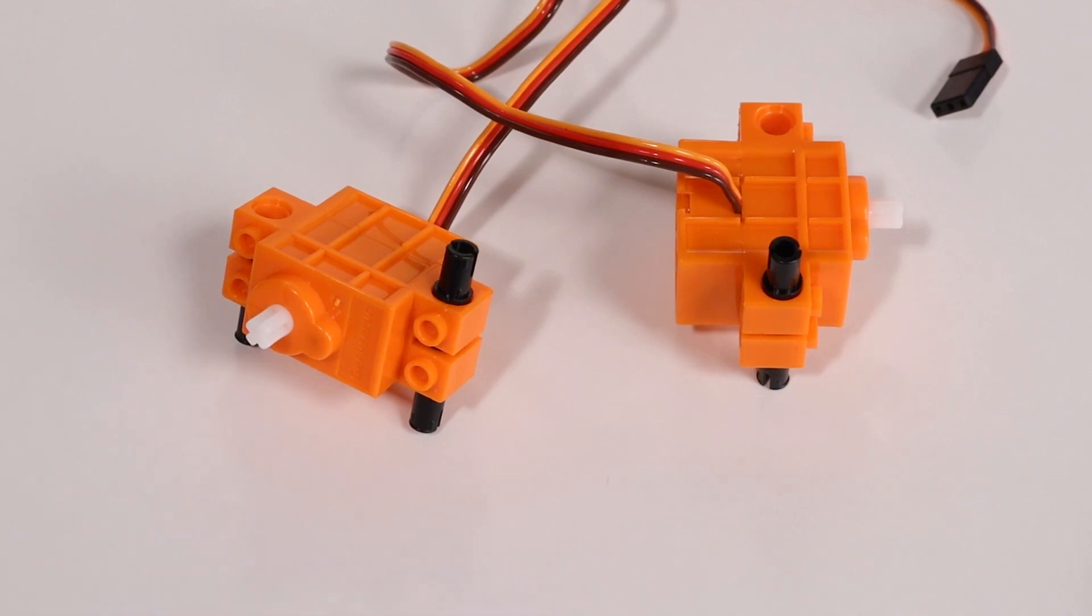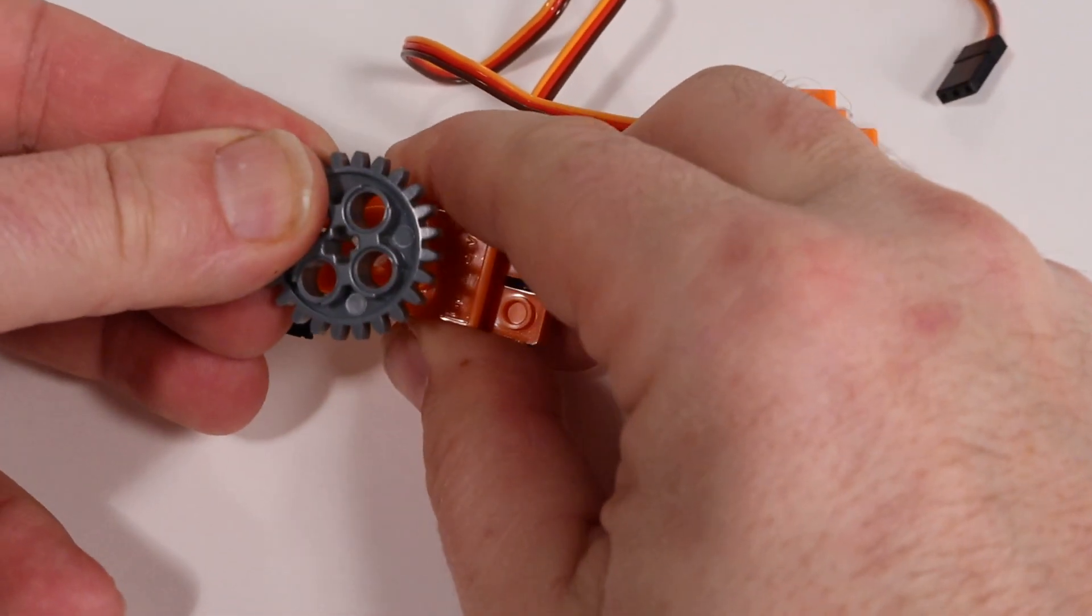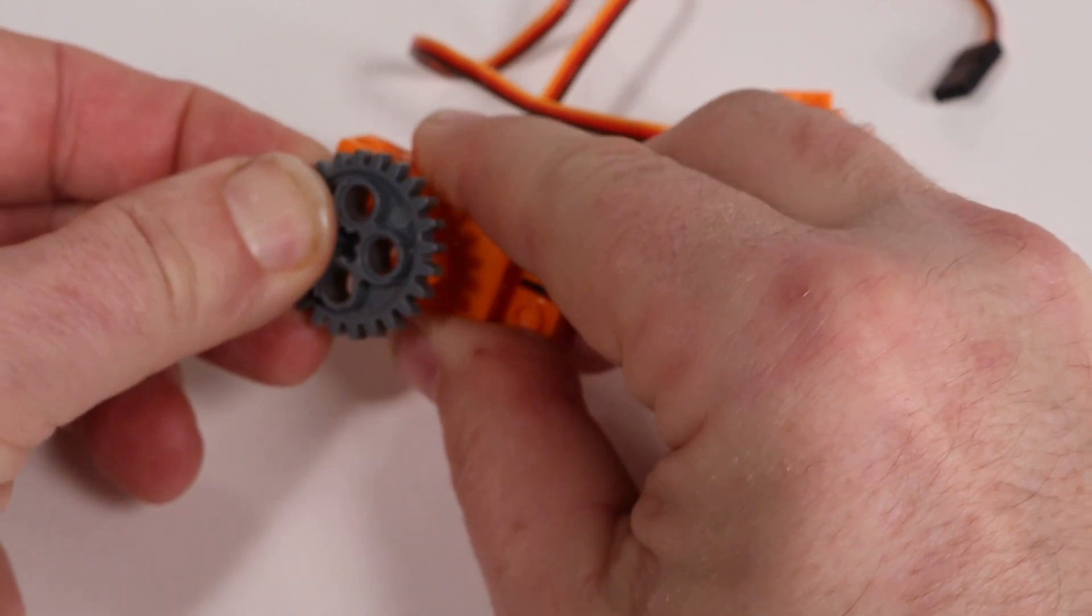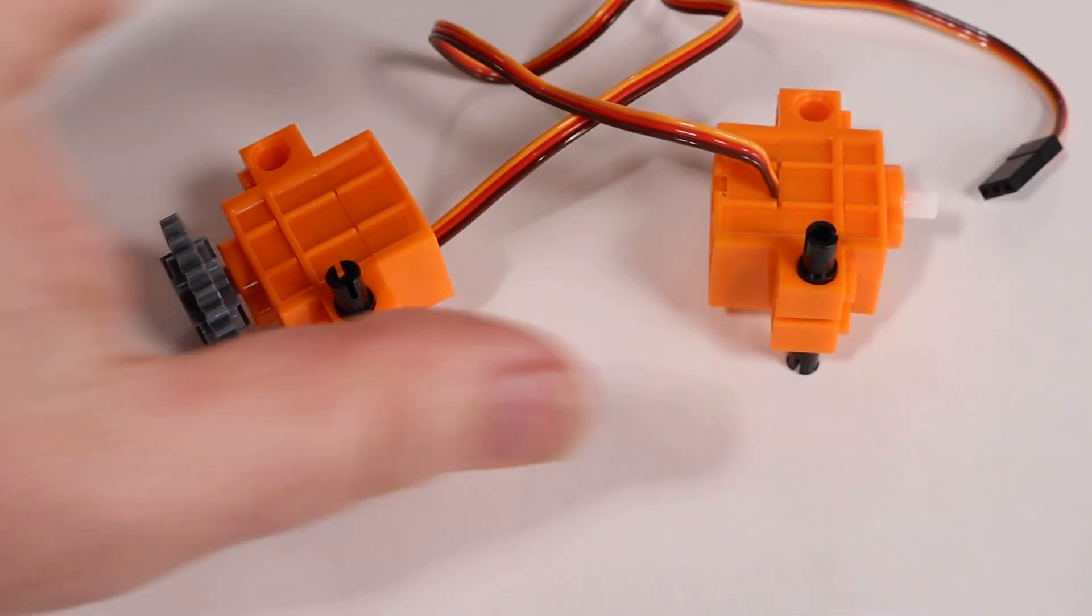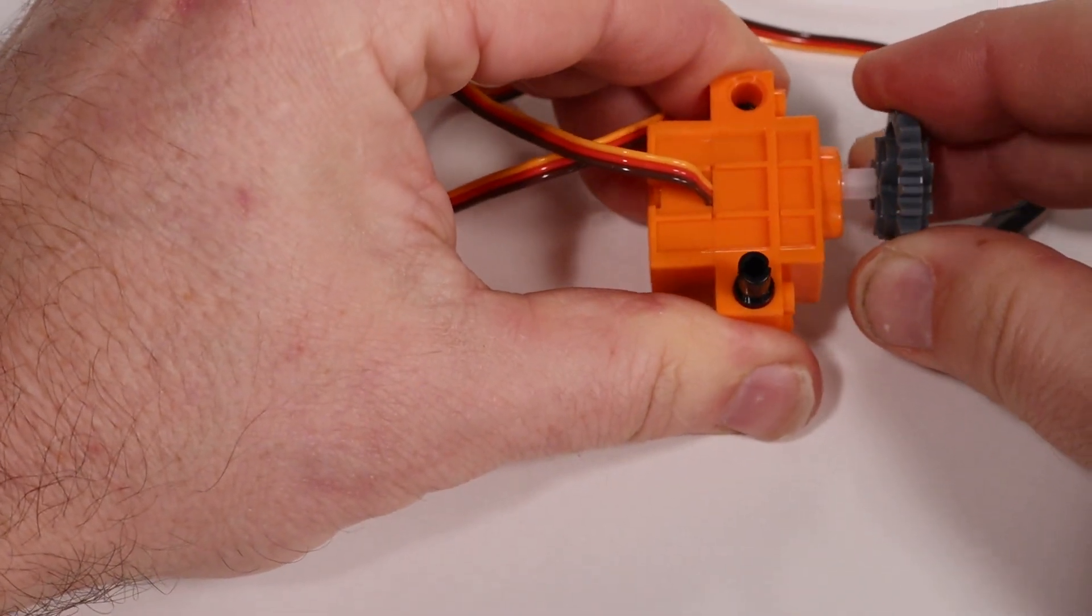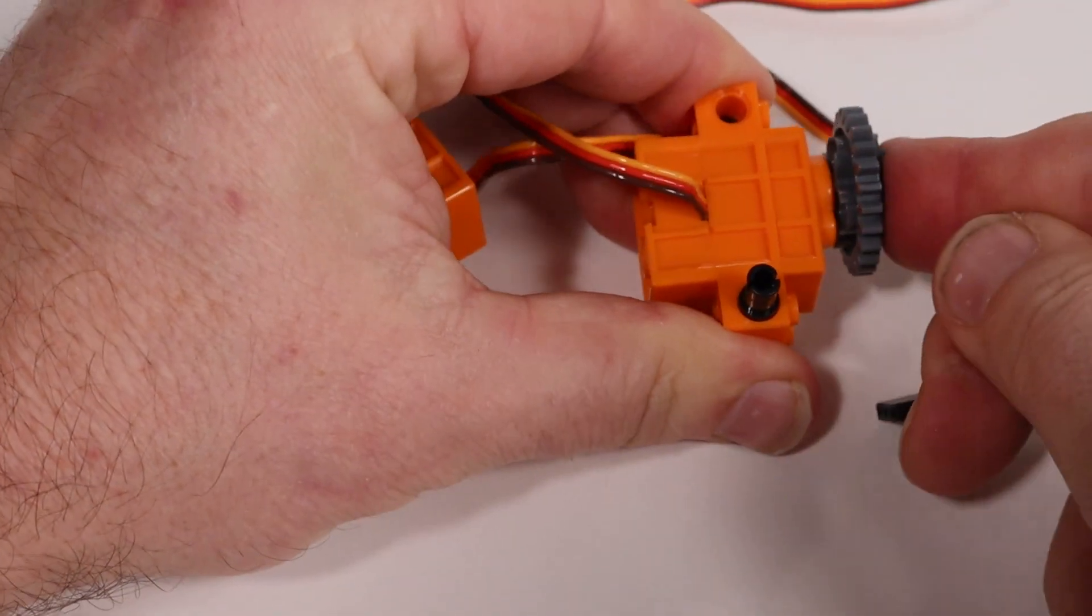Now we'll add the gears to the servos. Line up one of the large gears with the plus shaped cross section on the servo shaft and press it in place. Do the same on the second one, lining it up and pressing the gear onto the shaft.